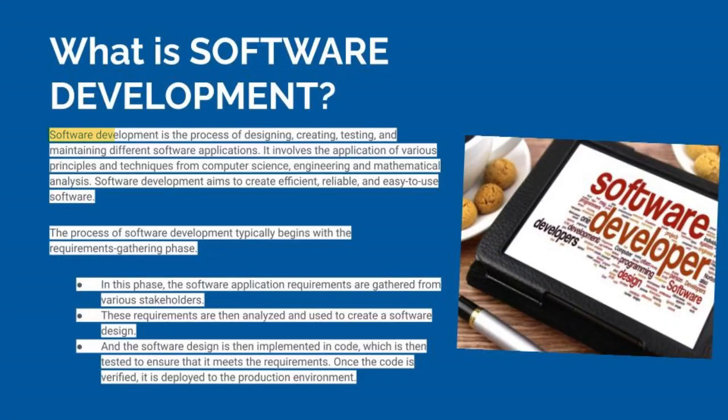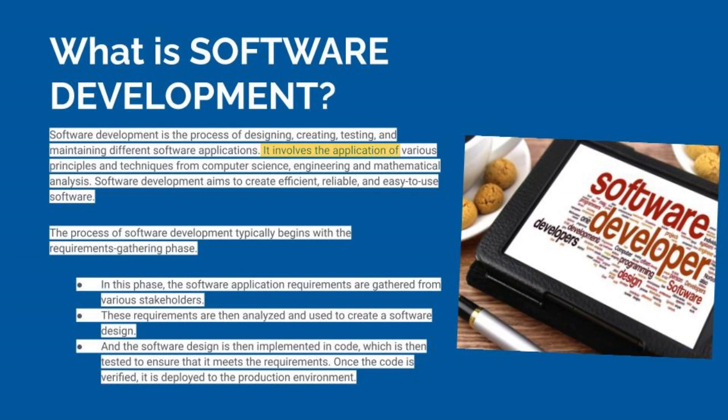This video is about software development. Software development is the process of designing, creating, testing and maintaining different software applications — which you must be doing or have studied, because aapne computer science padha hai, BCA kiya hai, ya phir aap apna career computer science mein banane wale ho. It involves the application of various principles and techniques from computer science, engineering and mathematical analysis. Software development aims to create efficient, reliable and easy-to-use software — the whole purpose is to make a product or application which is closest to real life.